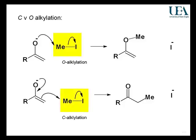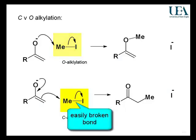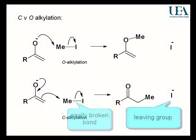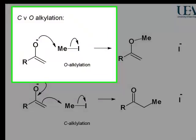So I pick methyl iodide. What you should remember about it is it has a reactive carbon-iodine bond. The carbon atom, although it has four bonds, can act as an electrophilic centre because when it receives a pair of electrons from the nucleophile, it can lose the bonding to the iodine. The iodine is the leaving group.